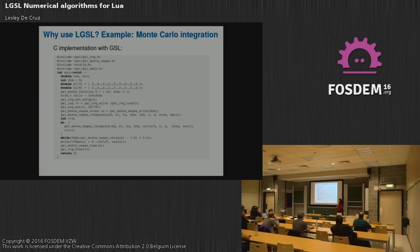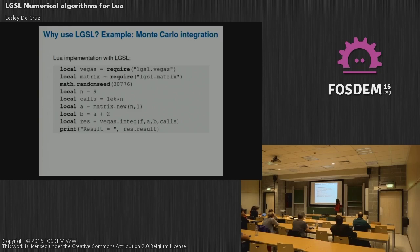Why use LGSL instead of writing a C application? A GSL C application is already relatively simple and elegant — for example, a Monte Carlo integration in C requires including headers, defining integration bounds, allocating spaces, doing a manual loop, checking convergence, and freeing resources. In Lua, it becomes simpler: require the Vegas and matrix modules, define your bounds, call Vegas.integ to integrate the function, and print your results.